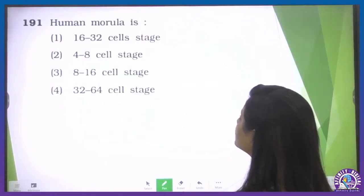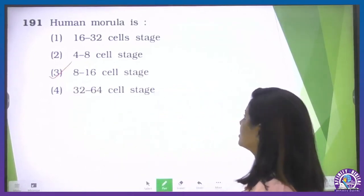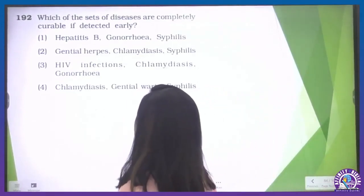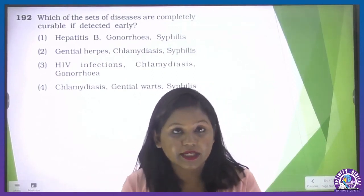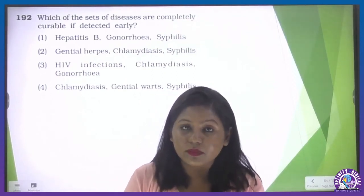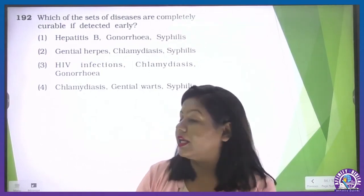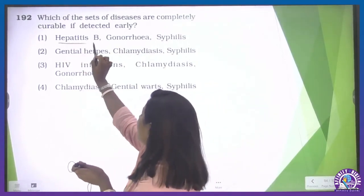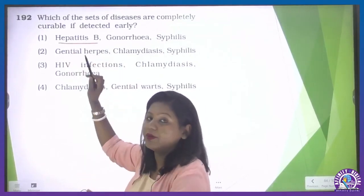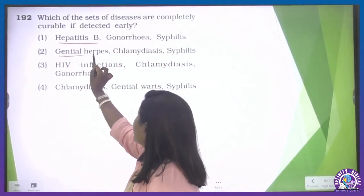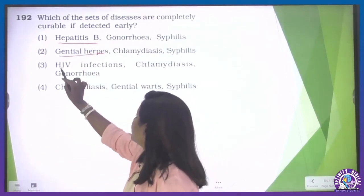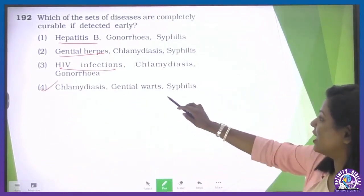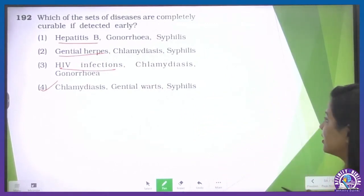Human morula — direct question — it is the 8 to 16 cell stage. The third option is our correct one. Which set of diseases are completely curable? Hepatitis B, HIV, and genital herpes are all incurable. Since every option contains hepatitis B, we look for the option with none of these incurable diseases — and that is the fourth option.